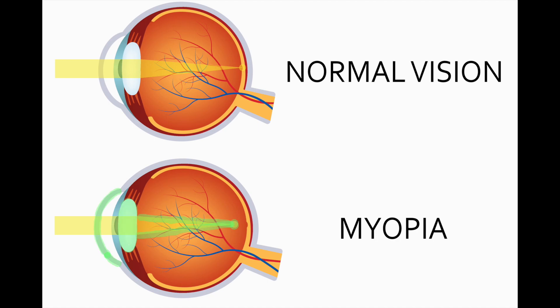Myopia occurs when there is a mismatch in the axial length of the eyeball and the refractive components of the eye, which puts the image in focus in front of the retina rather than right on the retina. Myopia progression occurs when there's an increase in the axial length of the eyeball. So myopia management can be defined as the slowing down of the growth of the eyeball, which also results in a slowing down of the diopter increase of your prescription power.